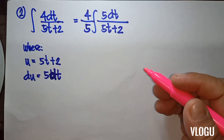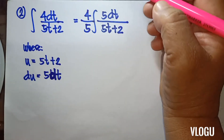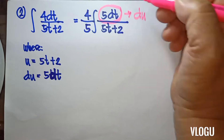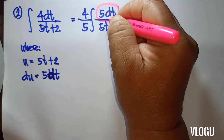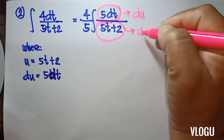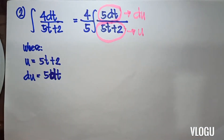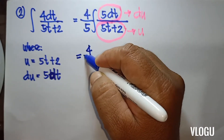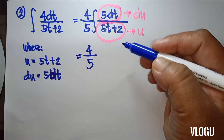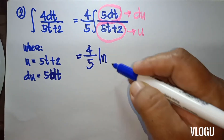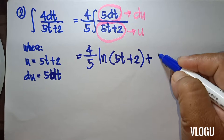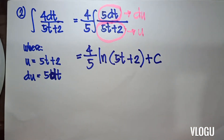Looking at the equation, 5dt is our du, and 5t plus 2 is our u. We now have the form of du over u. Applying the formula, the integral of du over u gives us 4 over 5 times ln of 5t plus 2 plus C. That is our final answer.